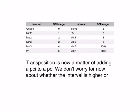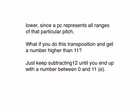So we can see the transposition is now just a matter of adding a pitch class interval to a pitch class. For now, we won't worry about whether the interval is higher or lower, since a pitch class represents all ranges of that particular pitch. So when we talk about pitch class 0, we mean every C, and pitch class 2 would be every D. So it doesn't make sense if we're talking about every C and every D to talk about whether the distance between them is up or down.